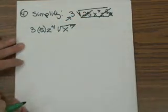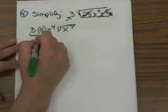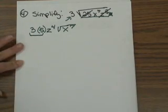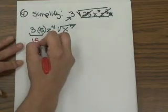So next what we'll do is, we'll just simplify the outside. And in this case, 3 times 5 gives me 15, z to the 4th.